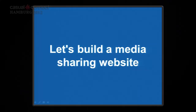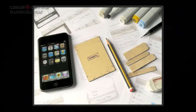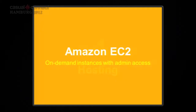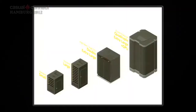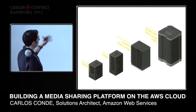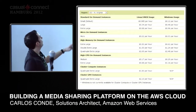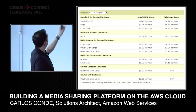Let's build a media sharing website. Assume you've done the software and the prototype — everything is great. First you need to host your system. For hosting we have a service called Amazon EC2, our most popular service. EC2 is a collection of a family of virtual servers you can use to do virtually anything. You have full administrator access to these machines. There's no upfront cost — it's like buying a book on Amazon.